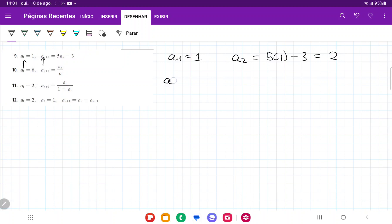And then for a3, once more, a3 is our an plus 1, so we're going to go 5 times an, so in this case it would be a2. 5 times a2, so that would be 5 times 2 minus 3, and that is 7.